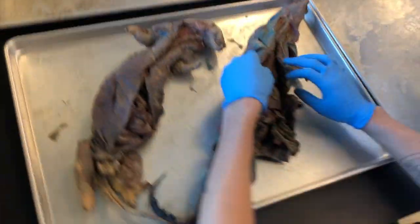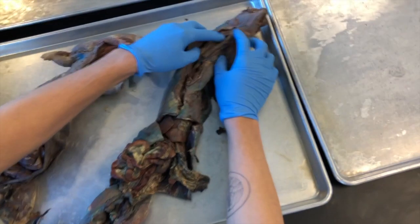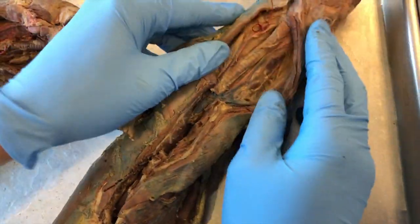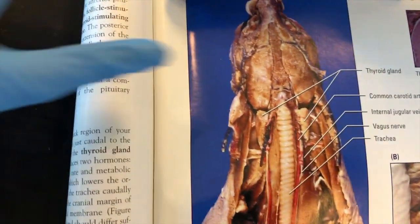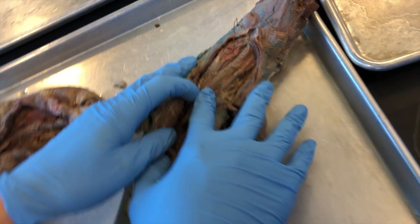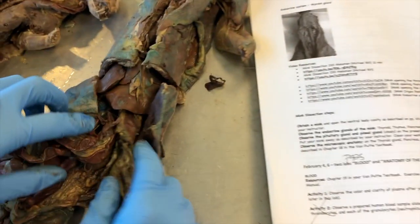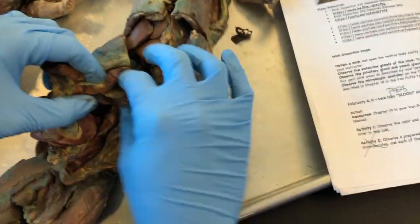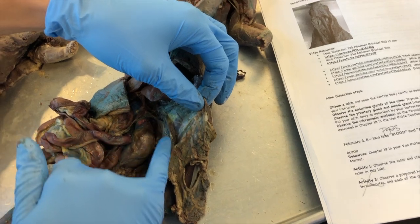Let's go over the endocrine system using a male and female mink. We'll start with the thyroid. To find the thyroid, locate the larynx — that ribbed tube along the throat. The thyroid glands are two nodules along the larynx. Moving down, the thymus is this flap covering the heart. Moving further down near the kidney, the pancreas can be identified by its granular texture.